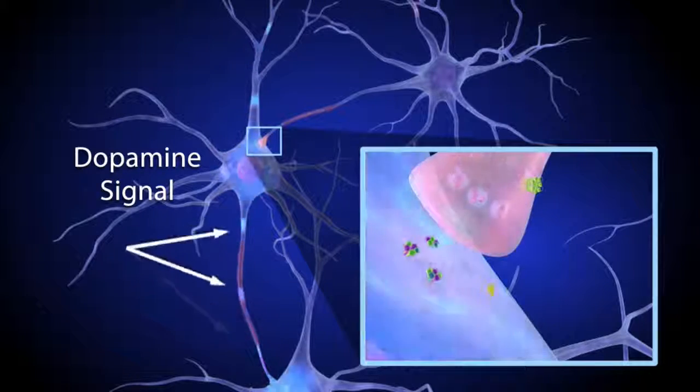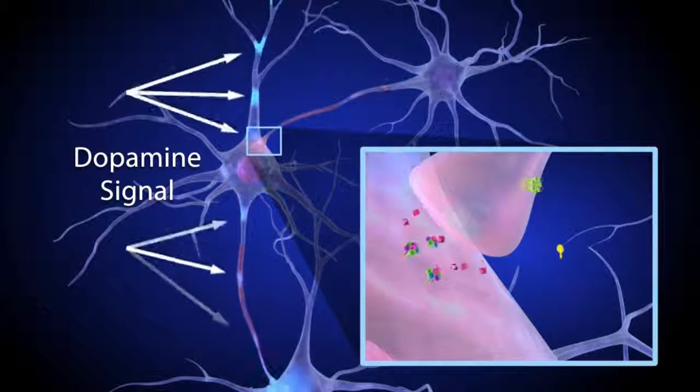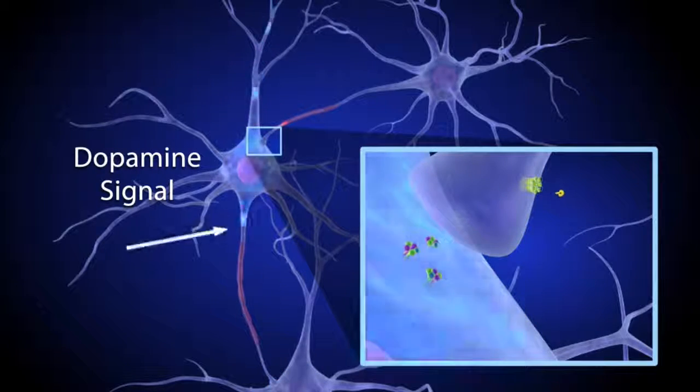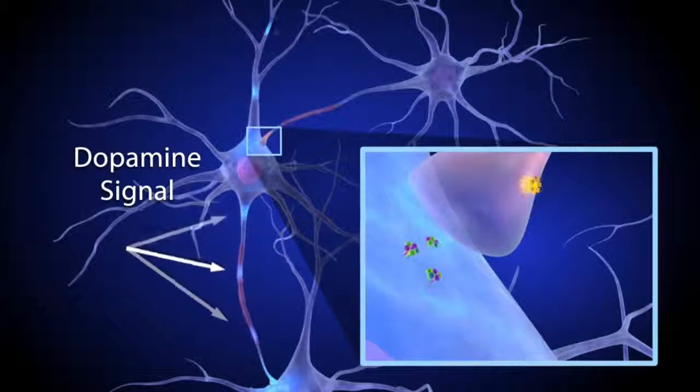Endocannabinoid and other mechanisms that regulate dopamine activity help the brain develop, learn, adapt, and navigate a complex world.